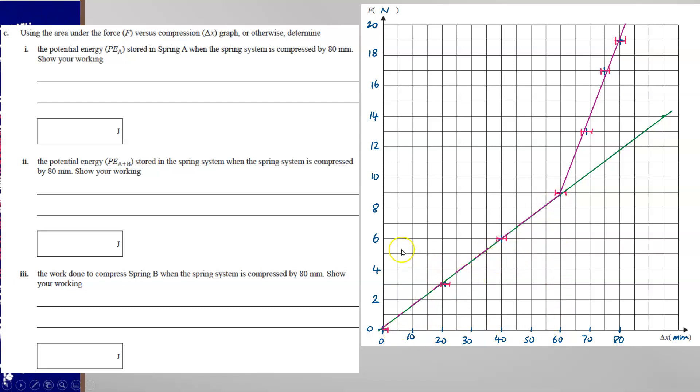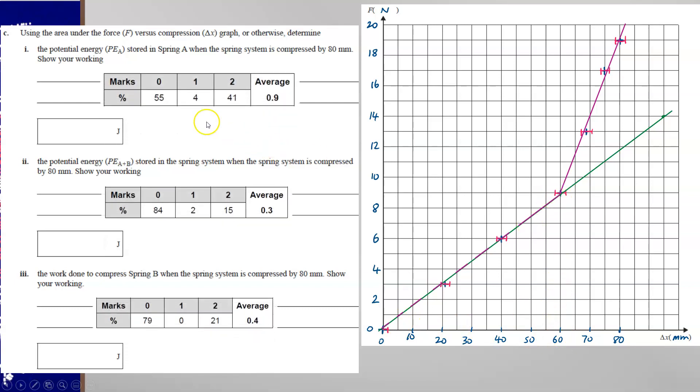So it gives you a clue that the area under the force compression graph is the energy. And that's because work done is force times distance, but the force is being continually changed to apply that distance. And so the average force times by the distance would give you the area of a triangle. And again, this question was not well answered.